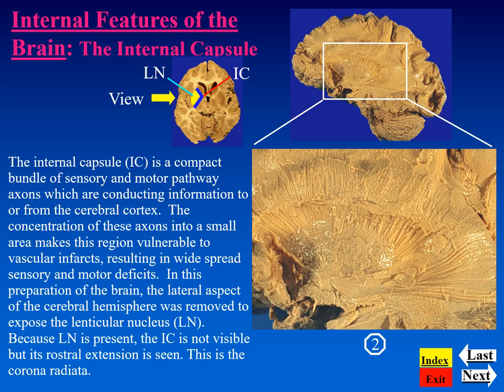To study the internal capsule in greater detail, I prepared this special dissection of the lateral surface of the cerebral hemisphere. By doing so, this area of gray matter has been exposed, which is the lenticular nucleus. With the lenticular nucleus in view, we cannot see the internal capsule because it lies lateral to it and thus is hiding it. But we can see the fiber bundles radiating from the internal capsule — fibers carrying information to or from the cerebral cortex — known as the corona radiata.